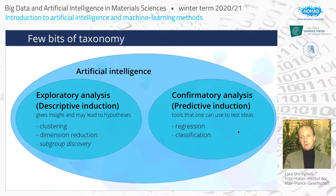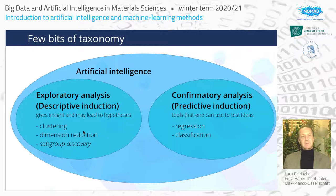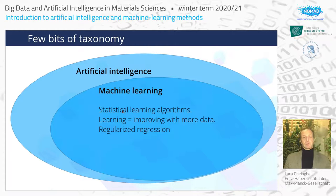In the two classes: on the confirmatory side we place regression and classification, which I will discuss extensively. On the exploratory side we have clustering or cluster analysis, dimension reduction, and subgroup discovery — a name that Matthias Scheffler has already mentioned, which is an advanced form of descriptive induction and will be introduced in a dedicated lecture in January.